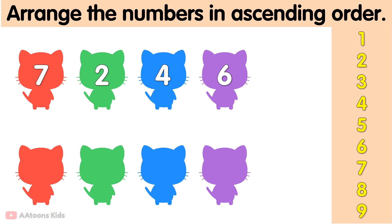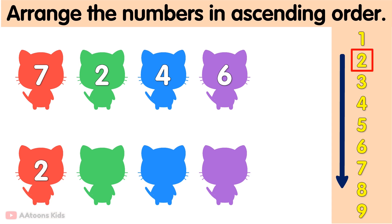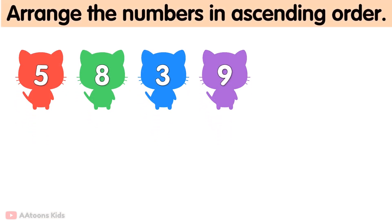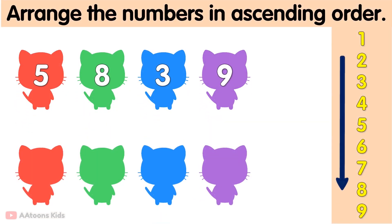Arrange the following numbers in ascending order. To arrange the numbers in ascending order, we start with the smallest number and move toward the largest number. Firstly, we need to find the smallest number among 7, 2, 4, 6. 2 is the smallest number, after that 4, 6, and 7. So finally, ascending order of 7, 2, 4, 6 is 2, 4, 6, 7.